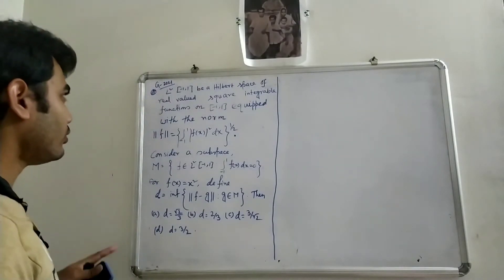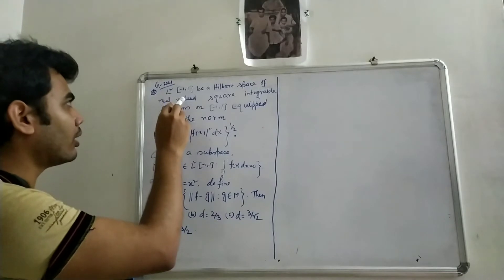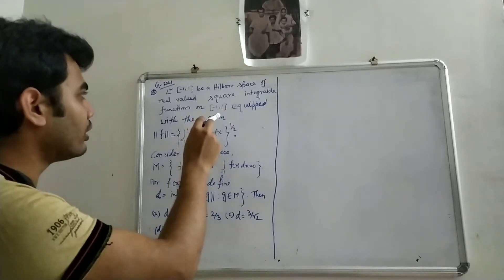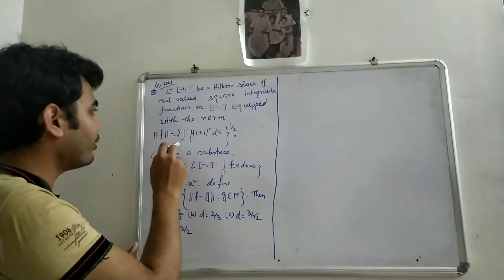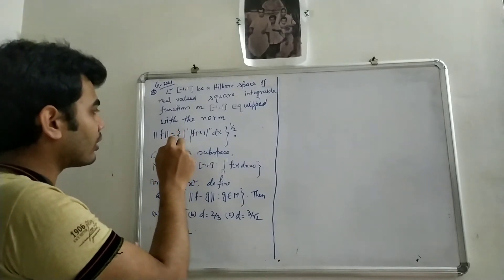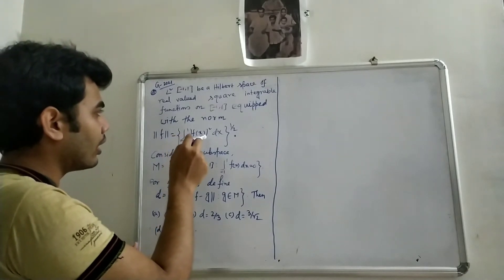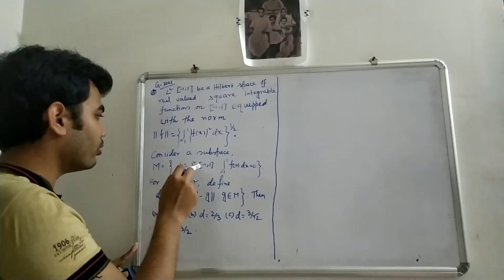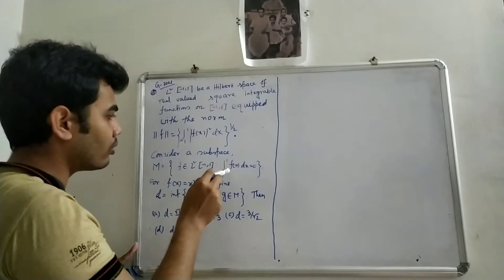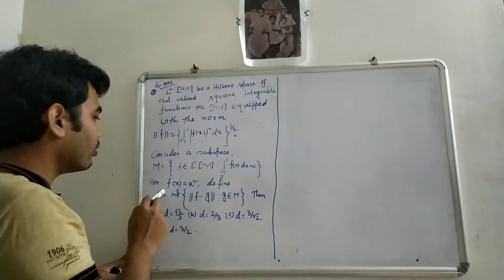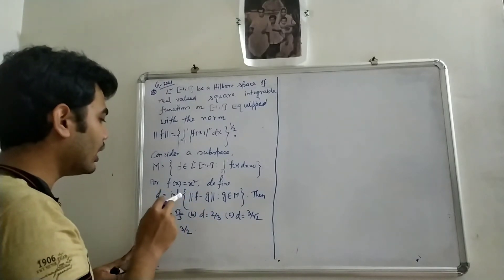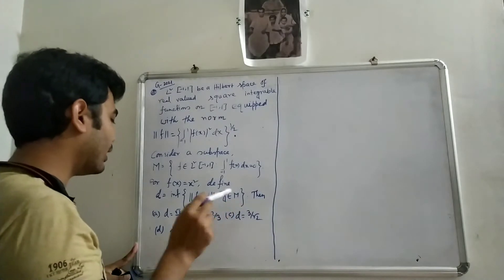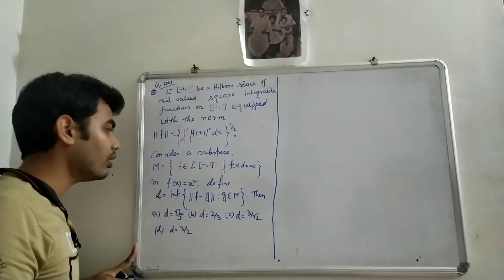Our problem is: Let L2([-1,1]) be a Hilbert space of real-valued square-integrable functions on the closed interval [-1,1], equipped with the norm ‖f‖ = (∫₋₁¹ |f(x)|² dx)^(1/2). Consider a subspace M = { f ∈ L2([-1,1]) : ∫₋₁¹ f(x) dx = 0 }.